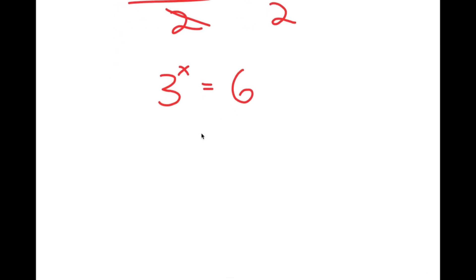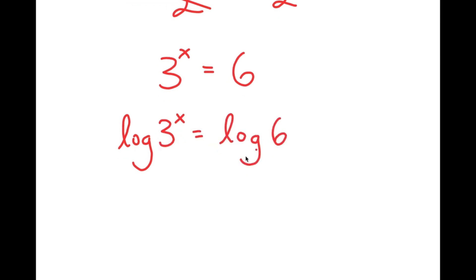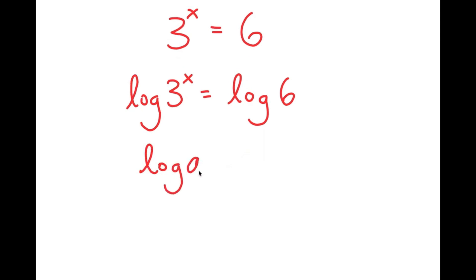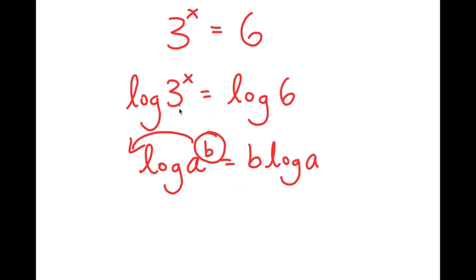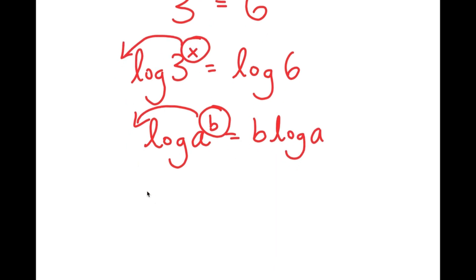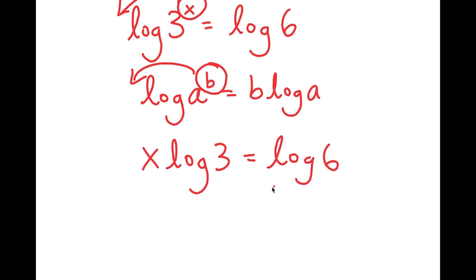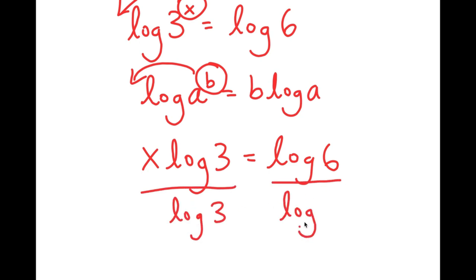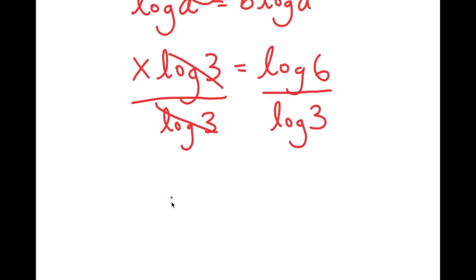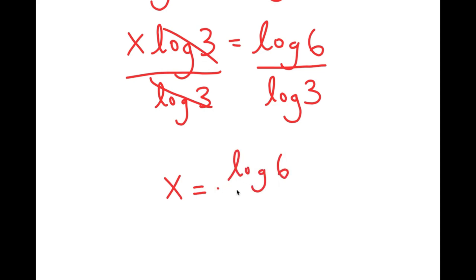From here, I take the log of both sides: log(3^x) equals log(6). Using the power rule — if I have log(a^b), I can move b to the front to get b times log(a) — I move x to the front: x times log(3) equals log(6). Dividing both sides by log(3) gives x equals log(6) over log(3).